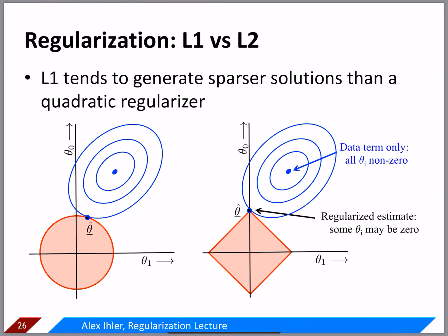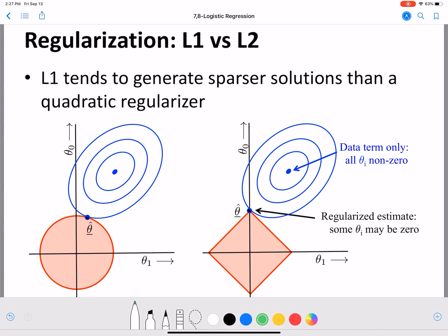Now let's look at L1 regularization. In L1 we take the modulus of the features, so the constraint becomes |theta_0| + |theta_1| ≤ a, where a is the maximum allowable penalty. Similar to L2, allowing up to a penalty results in a corresponding increase in the loss term. This translates to theta_0 + theta_1 ≤ a when both are positive.